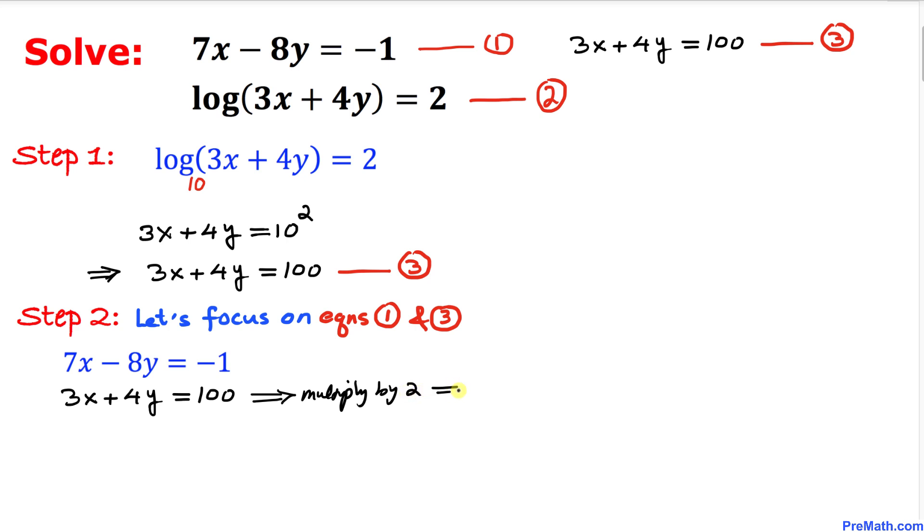If I multiply by 2, that gives us 6x plus 8y equals 200. The first equation I am going to write as it is, which is 7x minus 8y equals negative 1.